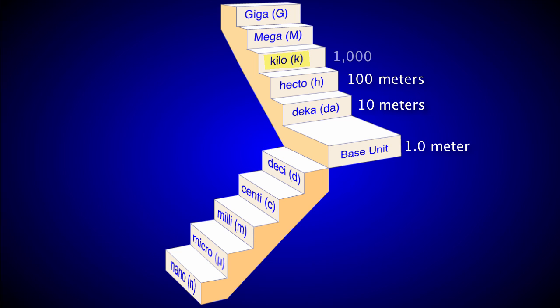Kilo means 1,000. So a kilometer is equal to 1,000 meters. The prefix mega means million. So a megameter is a million meters. And a gigameter is equal to a billion meters.